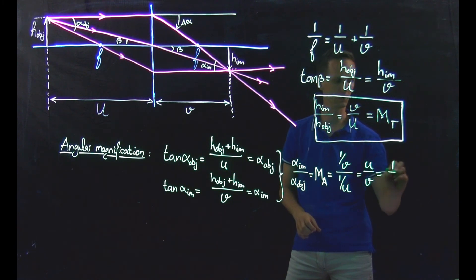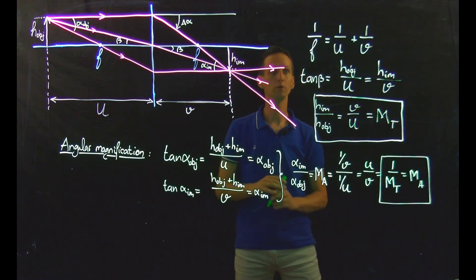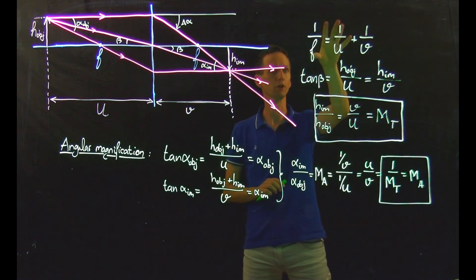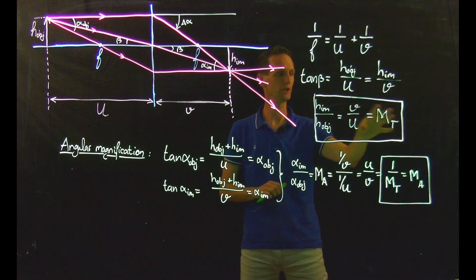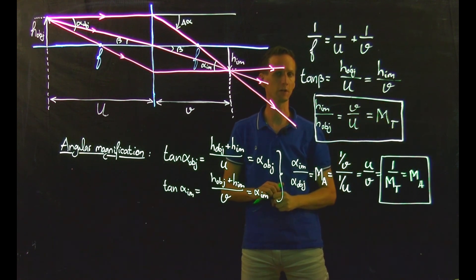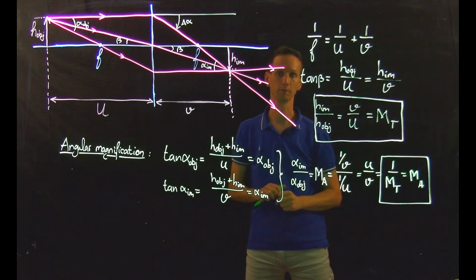So for now, these are the three equations to recall: the lensmaker's equation, the equation for the transversal magnification, and the relation between the transversal magnification and the angular magnification.